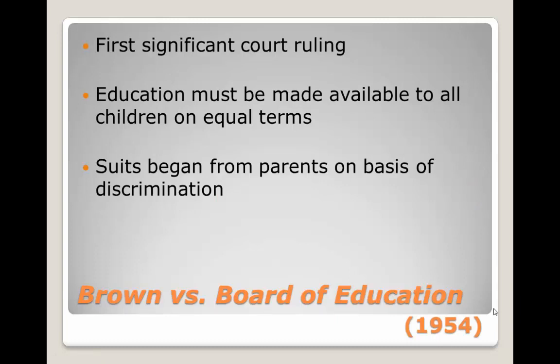The 1954 Brown v. Board of Education decision was the first significant court ruling that impacted the education of children with disabilities. The court found that education must be made available to all on equal terms. After the Brown decision, parents of children with disabilities started bringing suit against schools and districts for segregating and excluding students with disabilities.